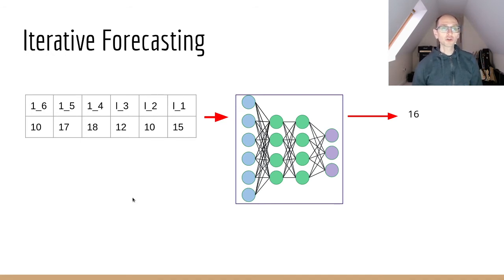Here we've got a neural network model that expects six input values, these are the six lags: lag one, two, three, four, five and six going backwards in time. We're going to pass that into the neural network model. It's going to weight all of those variables and out is going to pop our one step forecast which is 16.